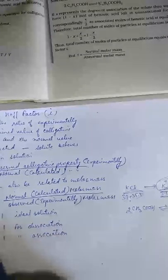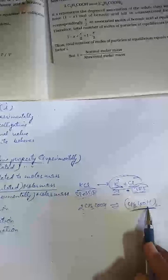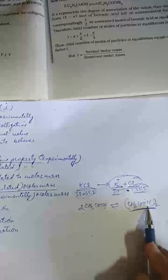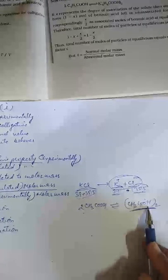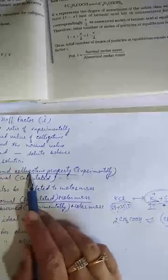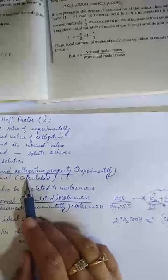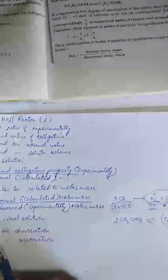i is less than 1 for association. For example, acetic acid: if 2 molecules convert into 1 molecule, the number of molecules decreases. When the number of molecules is less, the observed colligative property is less than the calculated (normal) colligative property. So i is always less than 1 for association. This summarizes the Van't Hoff factor.